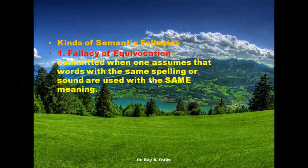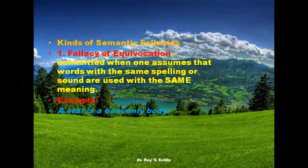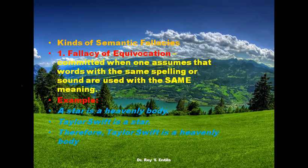The fallacy of equivocation is committed when one assumes that words with the same spelling or sound are used with the same meaning. For example: 'A star is a heavenly body. Taylor Swift is a star. Therefore, Taylor Swift is a heavenly body.' That is a wrong conclusion — an invalid argument.